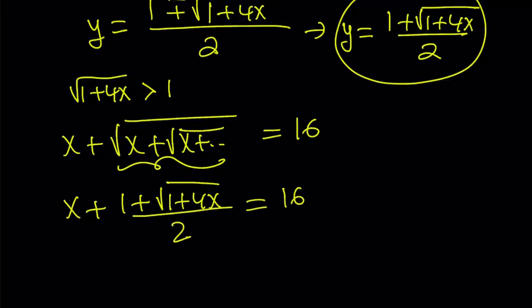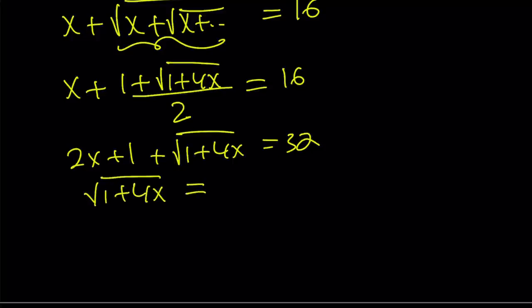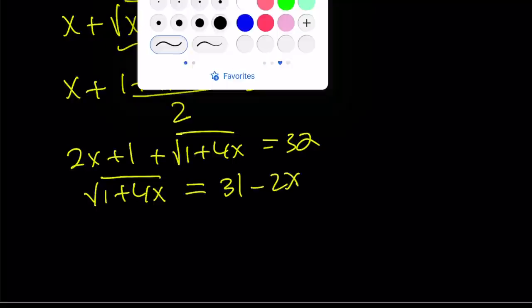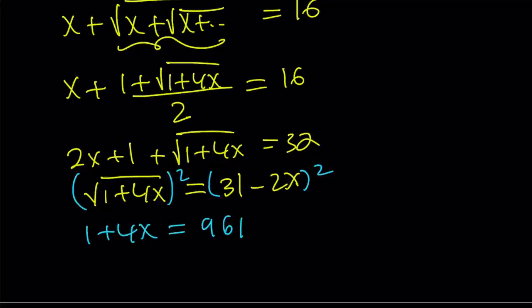From here, we can make a common denominator or multiply both sides by 2. That's going to give us 2x plus 1 plus the square root of 1 plus 4x is equal to 32. And then let's isolate the radical and put everything else on the right-hand side. That's going to give us 31 minus 2x. And now, we're going to square both sides. When we square both sides, we're going to get 1 plus 4x equals 961, which is 31 squared, minus 2 times 31 times 2, that should be 124x plus 4x squared.